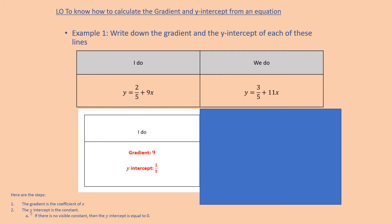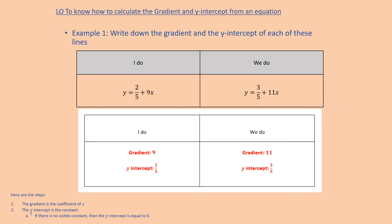If there is no visible constant, then the y-intercept is always equal to zero. Pause the video while you have a go at the we do. The coefficient of x is 11, so the gradient is 11, and the y-intercept — the constant — is three-fifths.